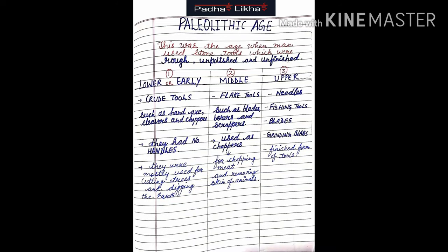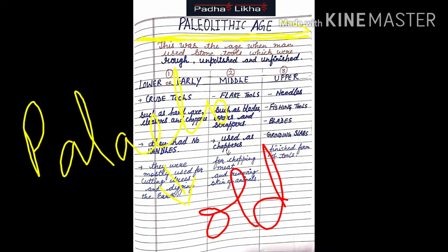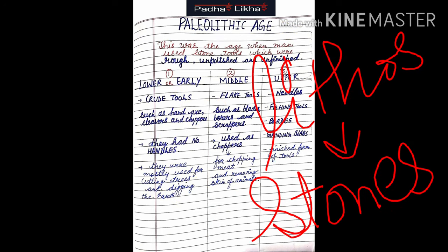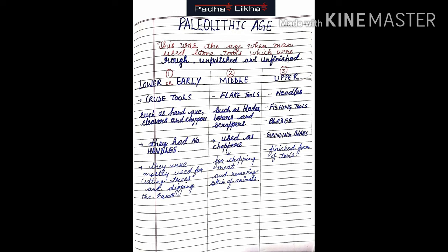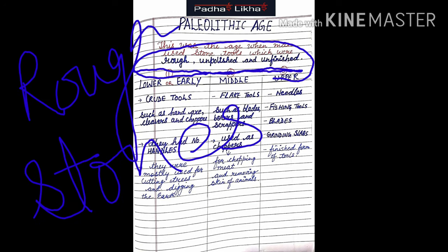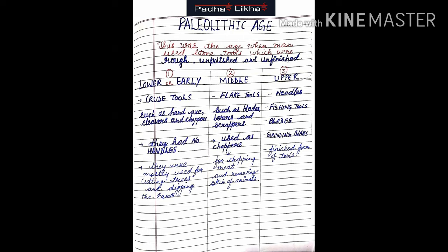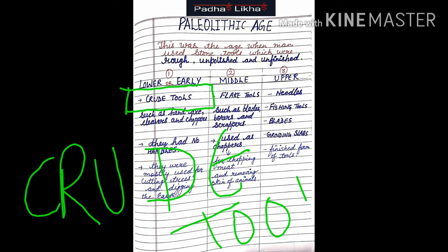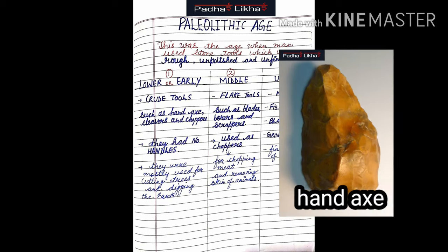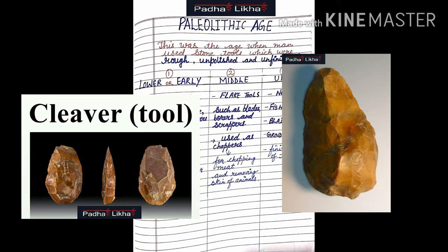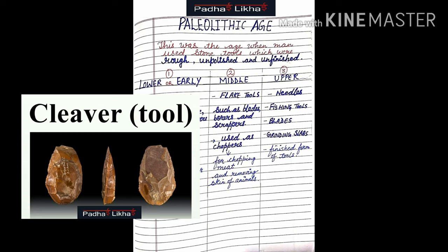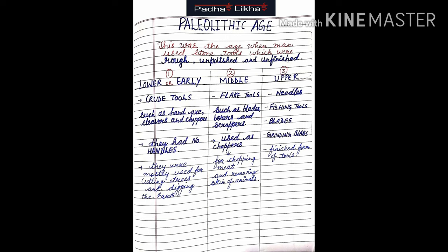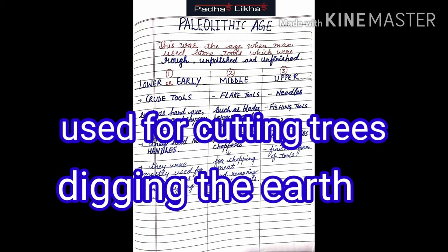The word Paleolithic is derived from two Greek words: 'palaios' meaning old and 'lithos' meaning stone. In the Paleolithic Age, the stone tools were very rough and unpolished. In the Lower or Early Paleolithic Age, people used crude tools like hand axes, cleavers, and choppers, which had no handles. These tools were mostly used for cutting trees or digging the earth.